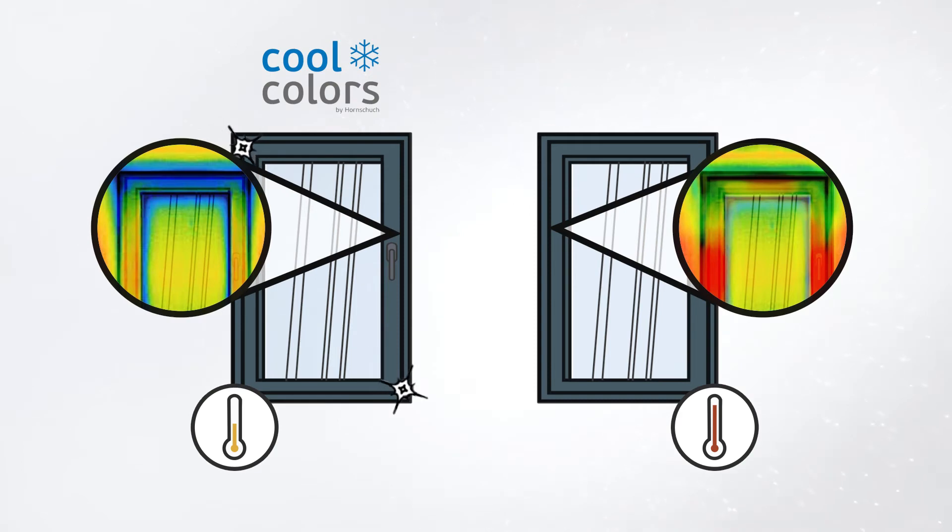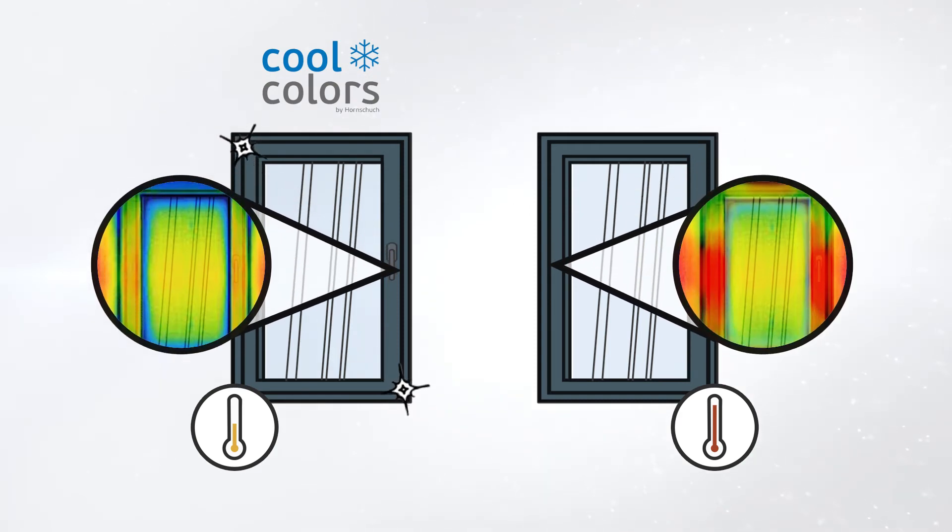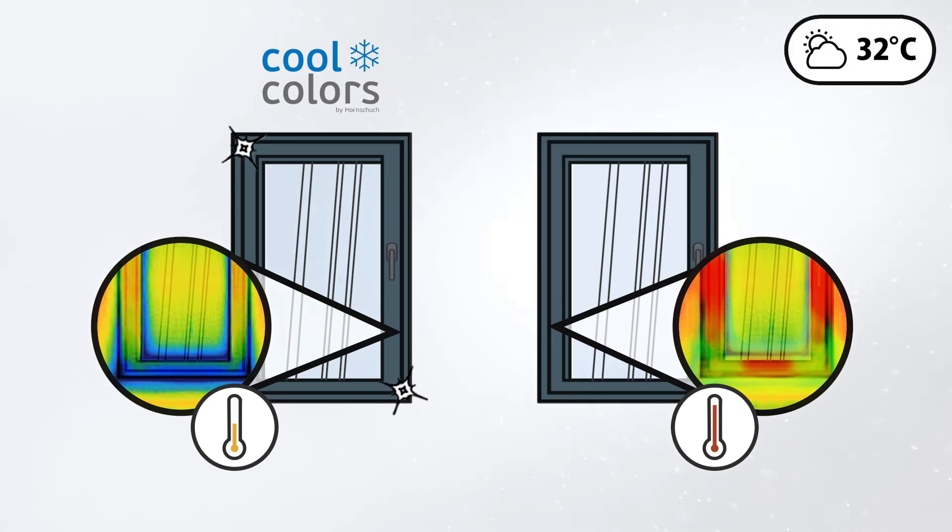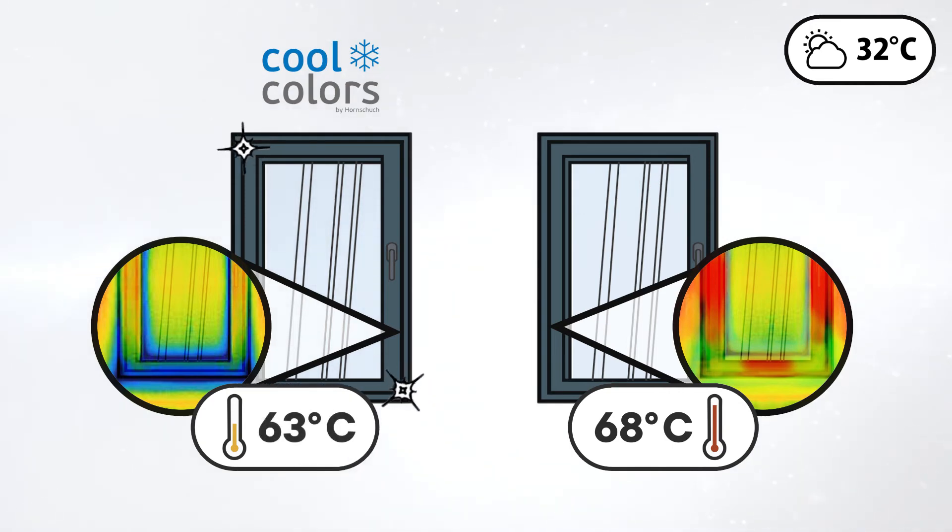The thermal imaging camera shows, on a sunny day with a temperature of 32 degrees Celsius, a conventional window in anthracite gray reaches a surface temperature of 68 degrees Celsius. The window profile with Cool Colors foil, on the other hand, heats up to only 63 degrees Celsius and is therefore a whole 5 degrees Celsius cooler.